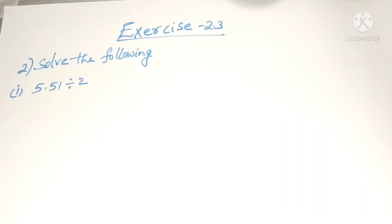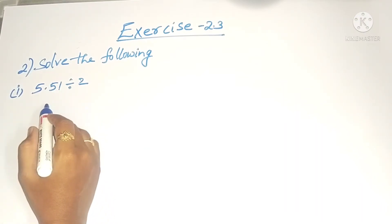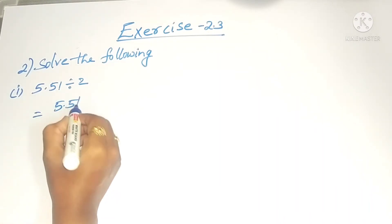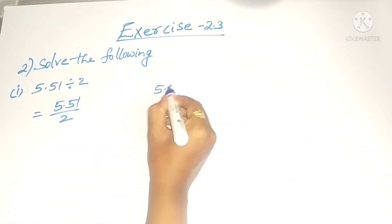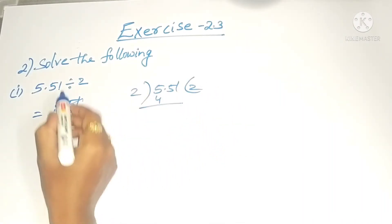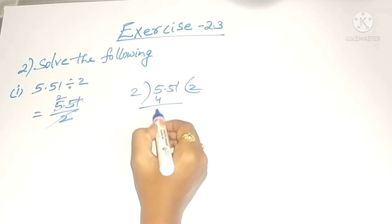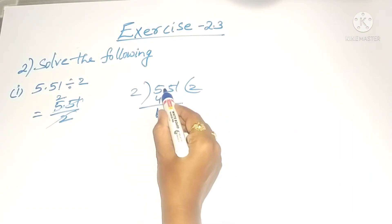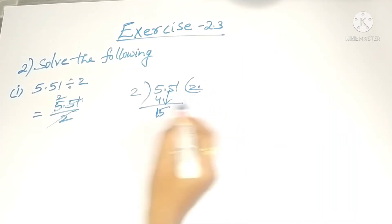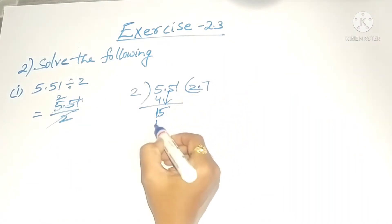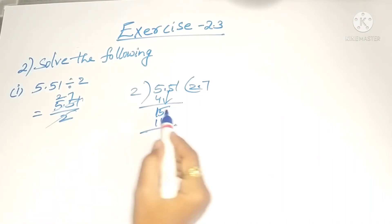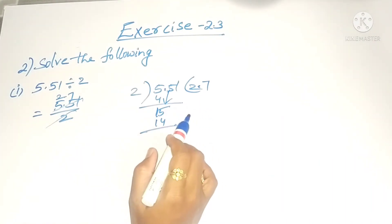In the second problem, solve the following — a decimal number division. This is 5.51 divided by 2. Two twos are four, so here one will be there. Decimal point is there, so put this decimal point in the quotient and bring this five down. Fifteen: two sevens are 14.